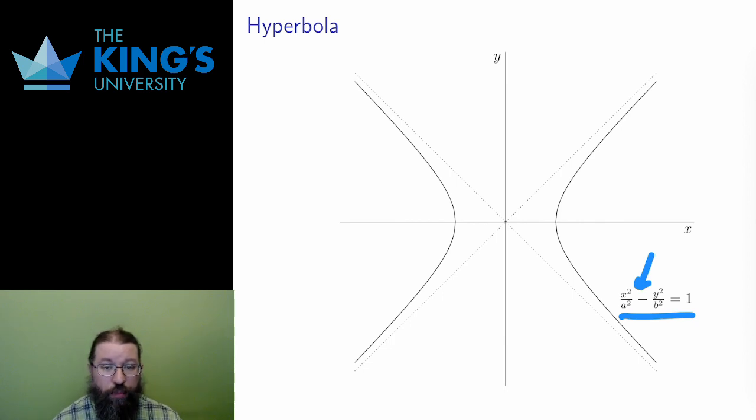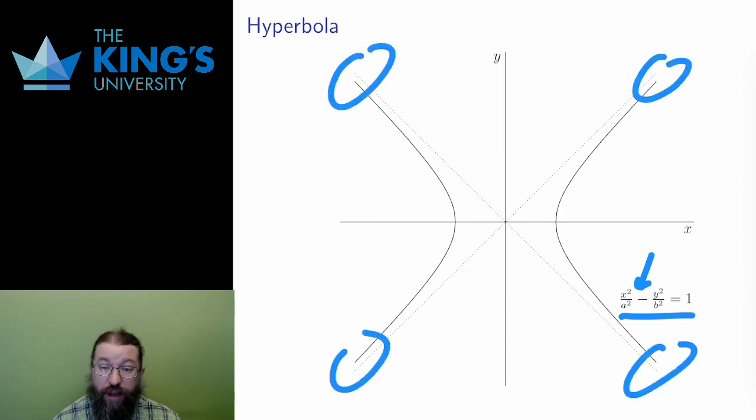However, the arms of the hyperbola, as they get further and further from the origin, become closer and closer to straight lines shown by the dotted lines in the diagram. The slopes of these lines are a over b and negative a over b, showing a bit how the numbers in the equations affect the shape.